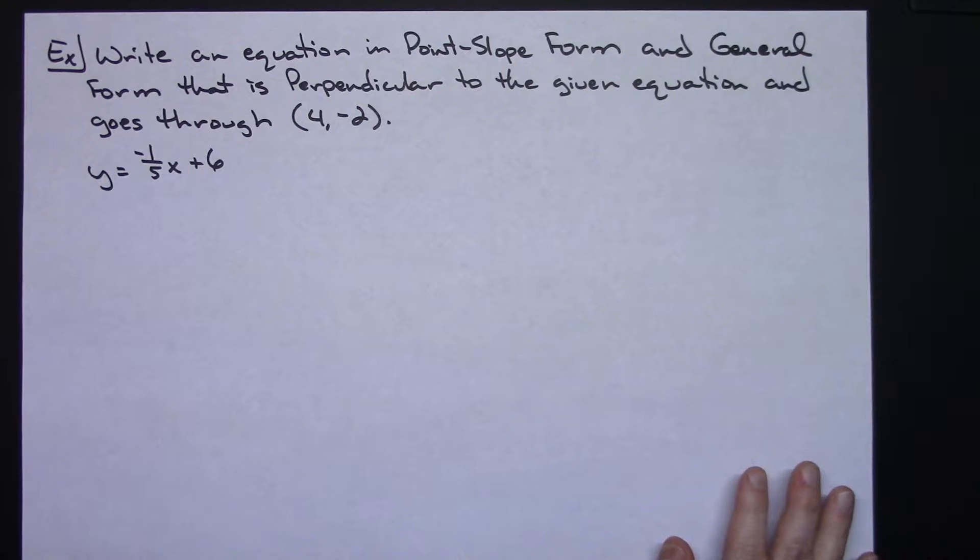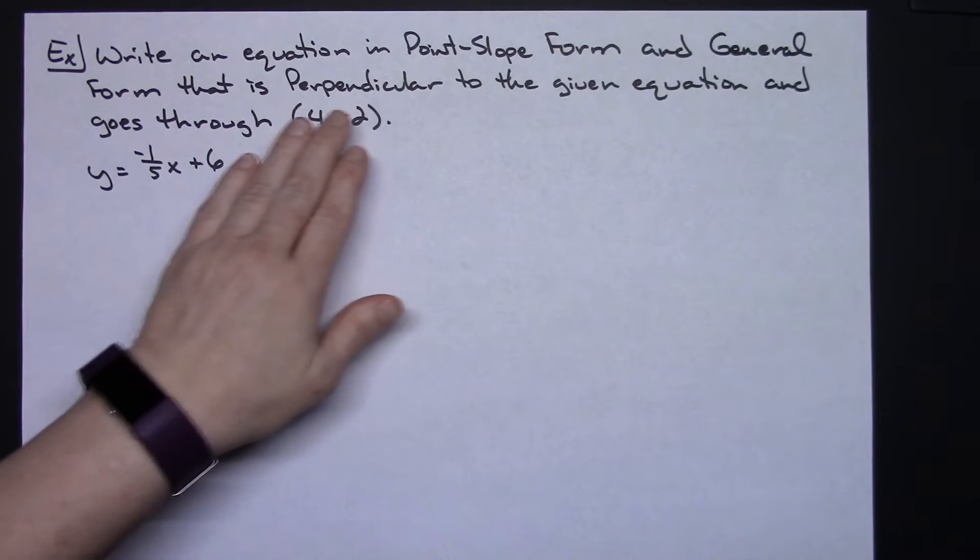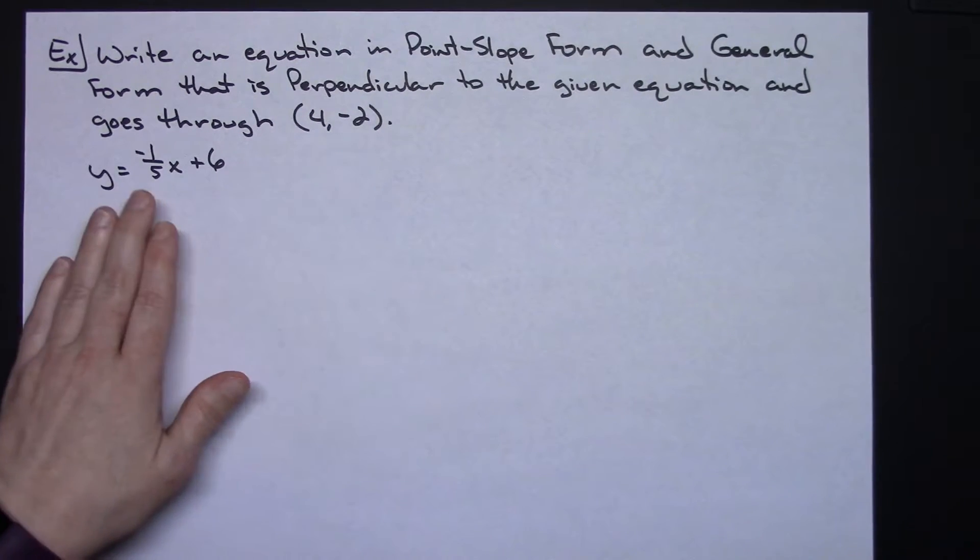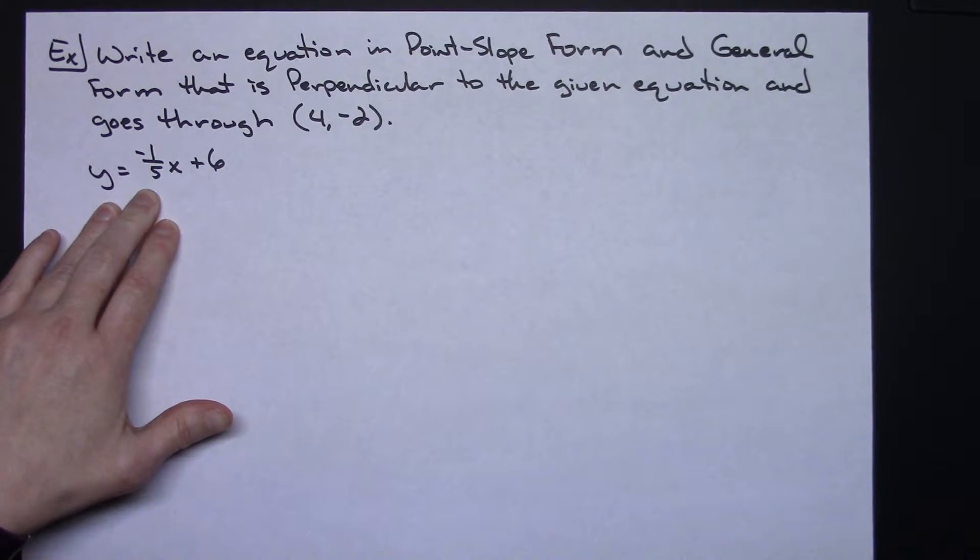So in this example it says write an equation in point-slope form and general form that is perpendicular to the given equation and goes through the point (4, -2). My given equation is y equals negative one-fifth x plus 6.